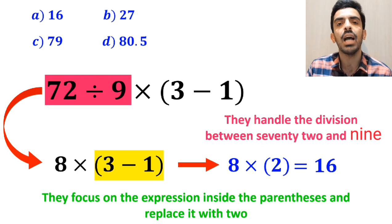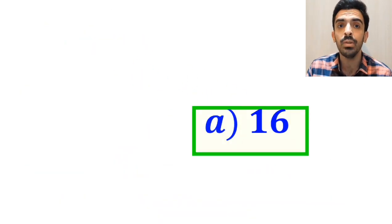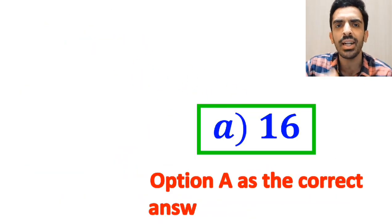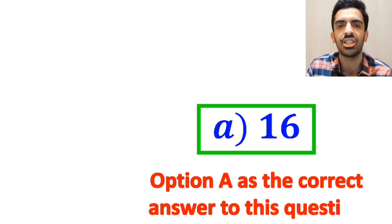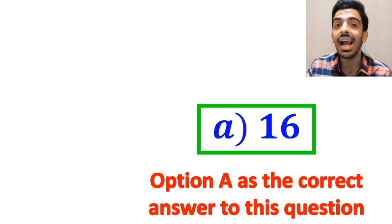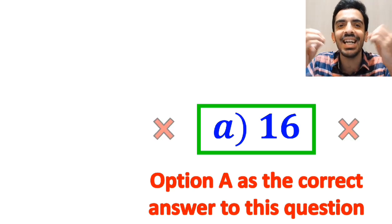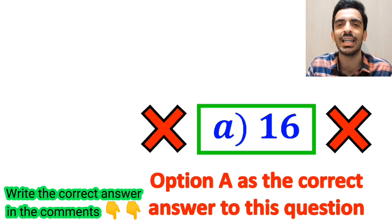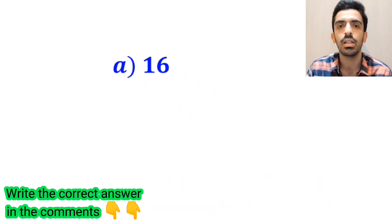Then they quickly look at the options and choose option A as the correct answer to this question. But I have to say, we were tricked and it's not the correct answer to this question.